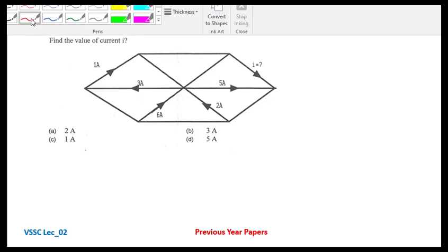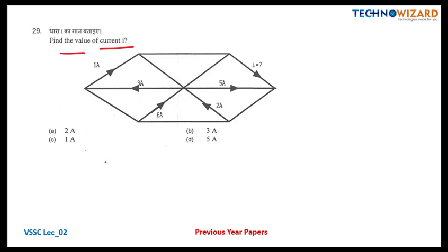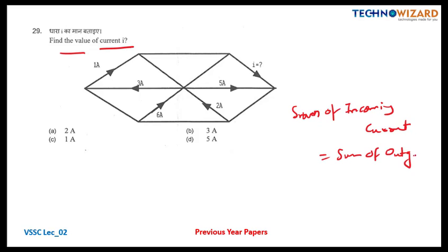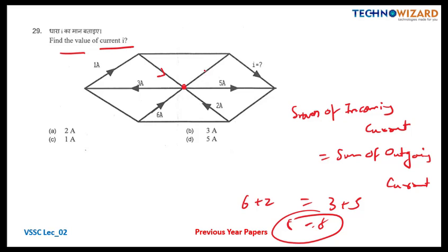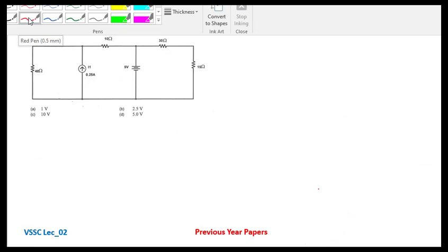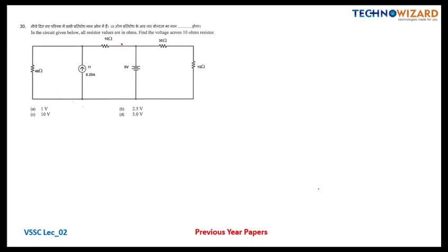Question number 29: find the value of current I using KCL — Kirchhoff's Current Law. The sum of incoming currents equals the sum of outgoing currents. Incoming at the node: 6 ampere plus 2 ampere = 8 ampere. Outgoing: 3 plus 5 = 8 ampere. KCL is verified; no current flows in those two branches. Therefore I equals 1 ampere — option C is the correct answer.